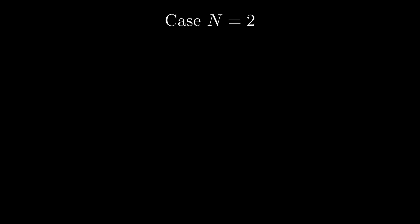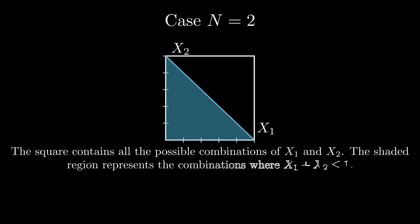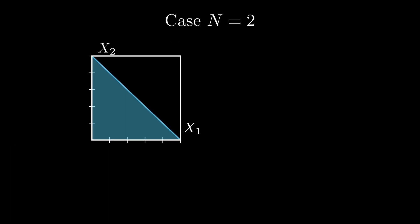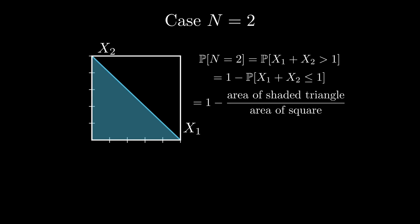Now let's move on to the case big N equals 2. Here, the stopping time big N equals 2 occurs if the sum of the first two variables exceeds 1. To visualize this, we consider the unit square, which represents all possible combinations of x1 and x2, each ranging from 0 to 1. The shaded triangular region within the square corresponds to the case where x1 plus x2 is less than or equal to 1. Therefore, we can compute the probability using the areas and get 0.5.